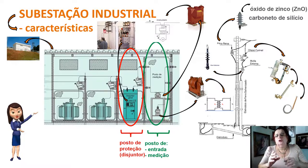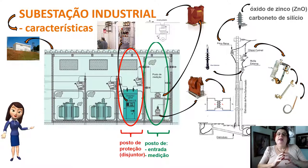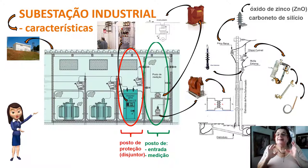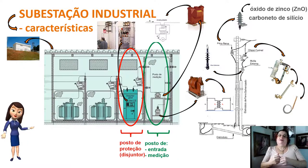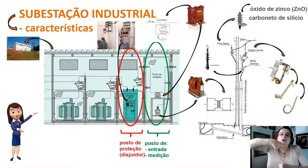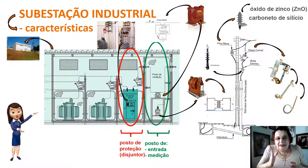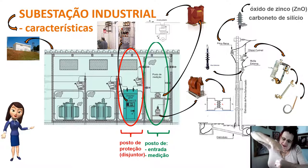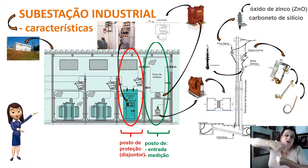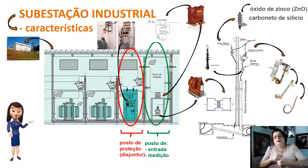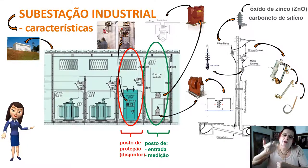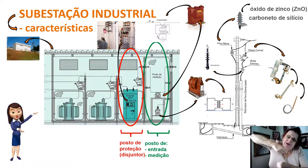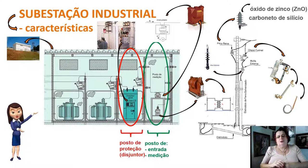É muito perigoso e é interessante sempre desligar todos os equipamentos de carga da fábrica antes de desligar o disjuntor, para que o centelhamento não seja muito elevado. Existem diversos tipos de disjuntores — a gás, a óleo — tudo para eliminar o centelhamento da abertura do disjuntor.